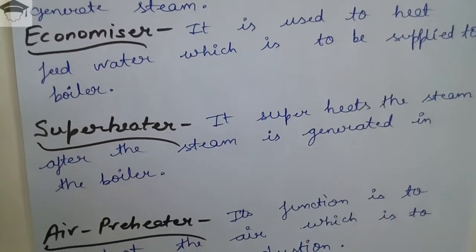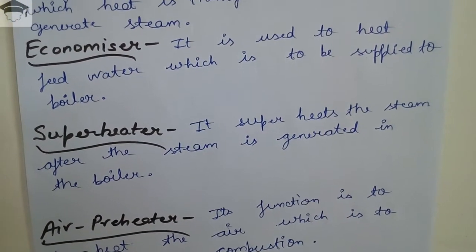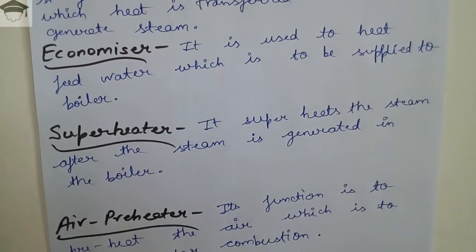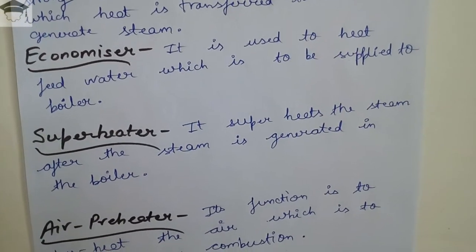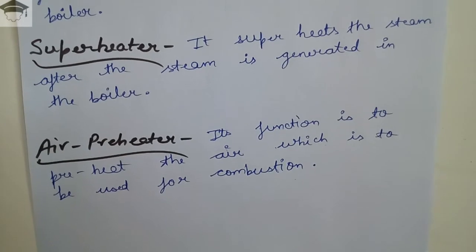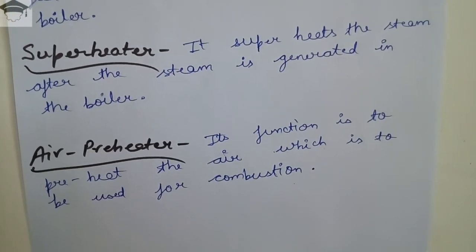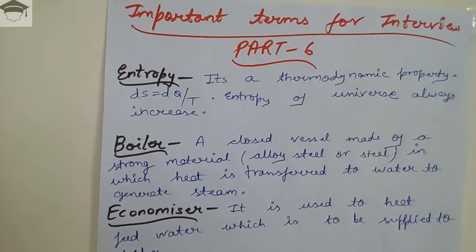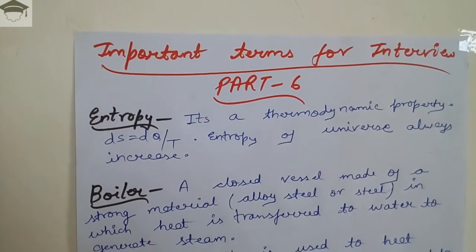The fourth term is super heater, which superheats the steam after it is generated in the boiler — that means before supplying it to the turbine, a super heater is placed. The fifth term is air preheater, whose function is to preheat the air which is to be used for combustion in the boiler. So these were the five terms covered in this video.